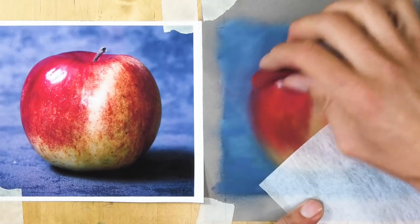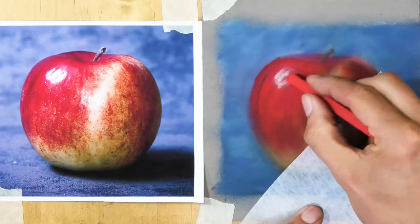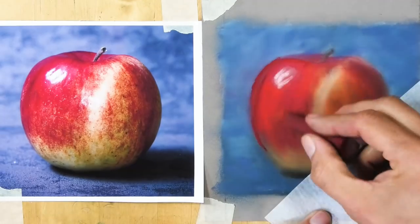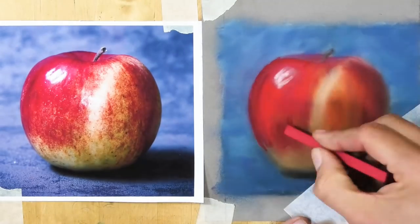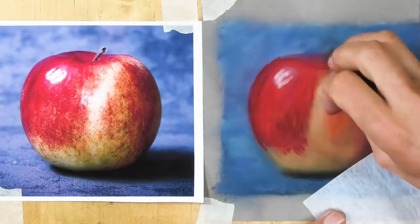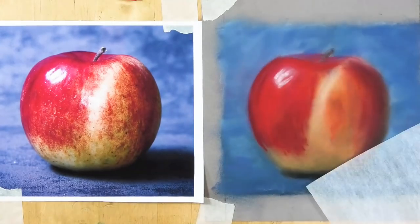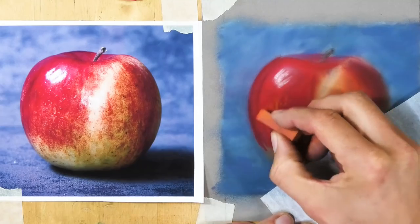So that's basically the main shape and colors done. I'm coming back in now—as you can see, I've used various different types of pastels to try and get more accuracy in there, so the underlayer has acted as my map.